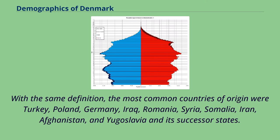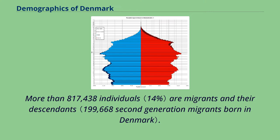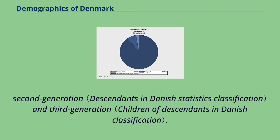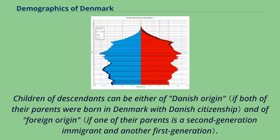The most common countries of origin were Turkey, Poland, Germany, Iraq, Romania, Syria, Somalia, Iran, Afghanistan, and Yugoslavia and its successor states. More than 817,438 individuals are migrants and their descendants. Non-Scandinavian ethnic minorities in Denmark include a handful of groups; modern minority counts cover first generation immigrants, second generation, and third generation, where children of descendants can be of either Danish or foreign origin.